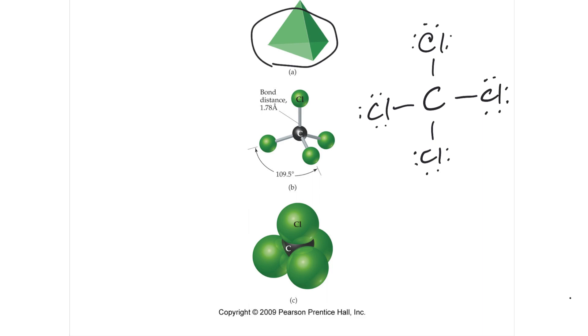If you were to have the carbon embedded in the center of that, and the chlorines at each of the vertices of that tetrahedral, that is a tetrahedral shape, and the experimental data has given a bond distance of 1.78 angstroms.